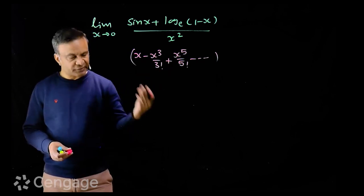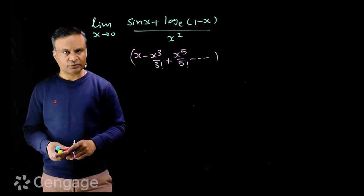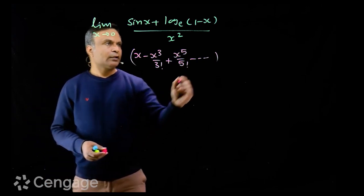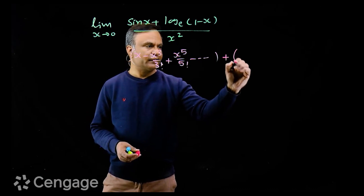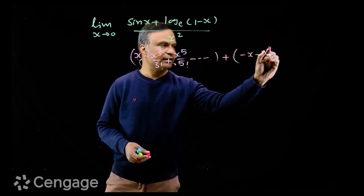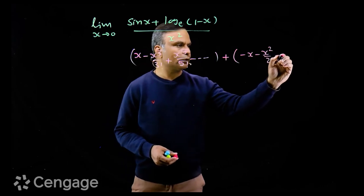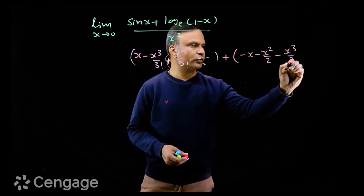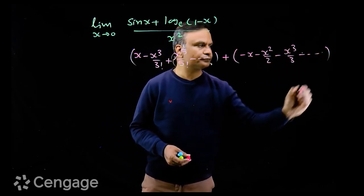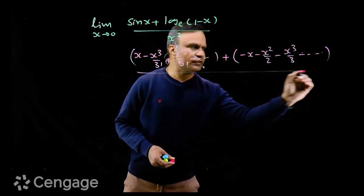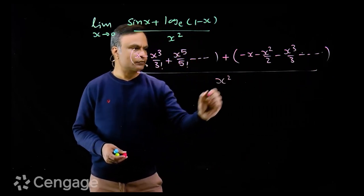Log 1 minus x expansion is minus x minus x square over 2 minus x cube over 3 and so on, this divided by x square for limit x tends to 0.